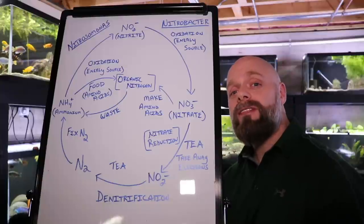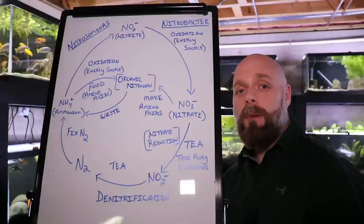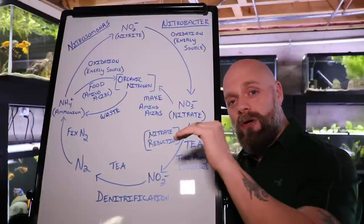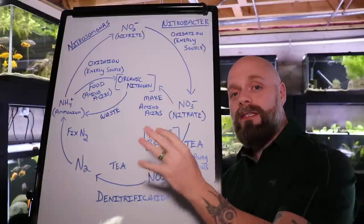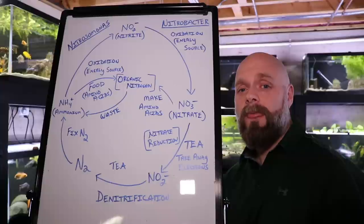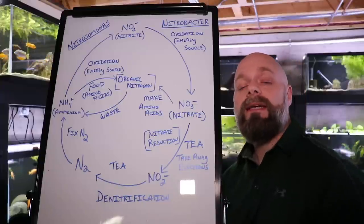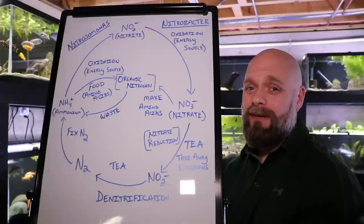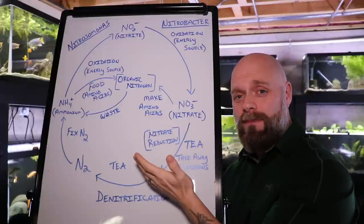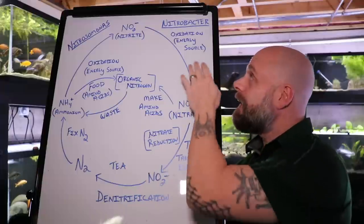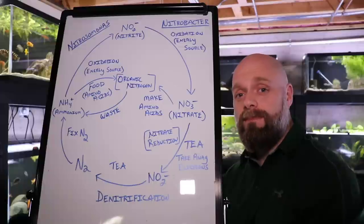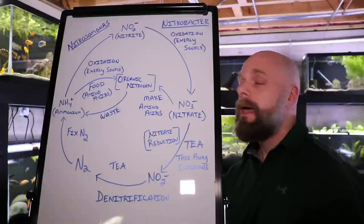Unfortunately, nitrite is also toxic for fish — it also prevents them from obtaining oxygen, though through a slightly different mechanism. Over time, ammonia levels go down and nitrite levels start to go up as ammonia is converted to nitrite. Luckily, there is a second genus of bacteria: Nitrobacter. That genus of bacteria is capable of oxidizing the nitrite and turning it into nitrate. Nitrobacter uses nitrite — the waste product of Nitrosomonas — as its own electron source, pulls electrons out of it, uses that energy to produce ATP, and we're left with nitrate.